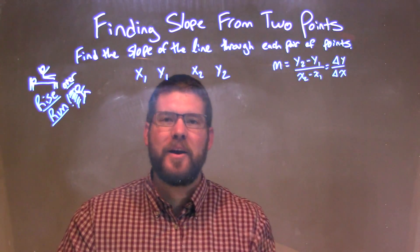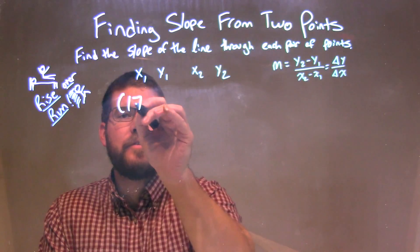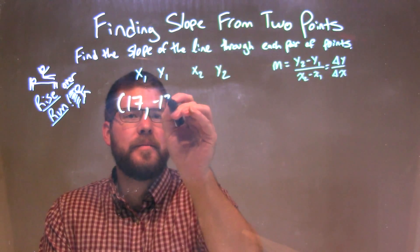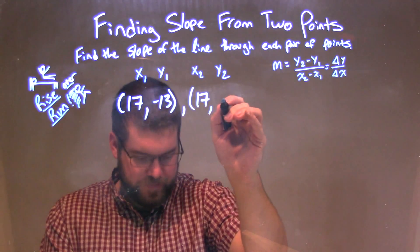We're going to find the slope of the line through each pair of points. So if I was given these points here, 17, negative 13, and 17, comma 8.